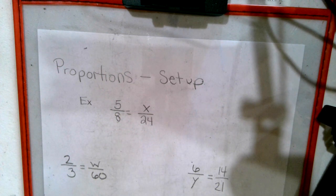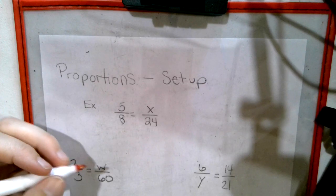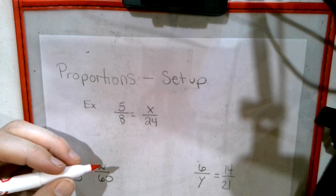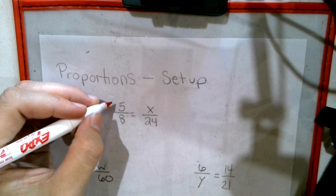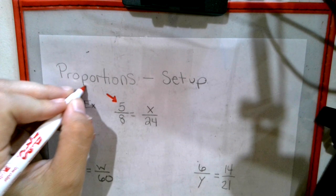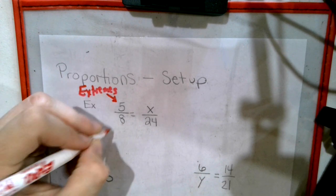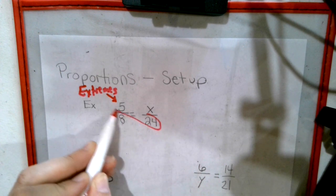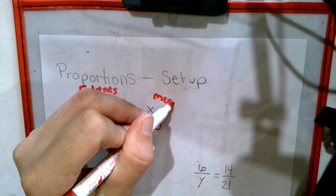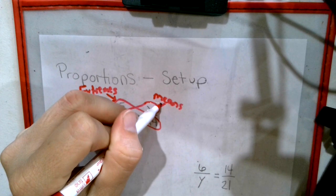Today we are going to be doing proportion setups. So here's how I remember this. We have two things called means and extremes. So this is the extremes. This diagonal. And these are the means. This diagonal.